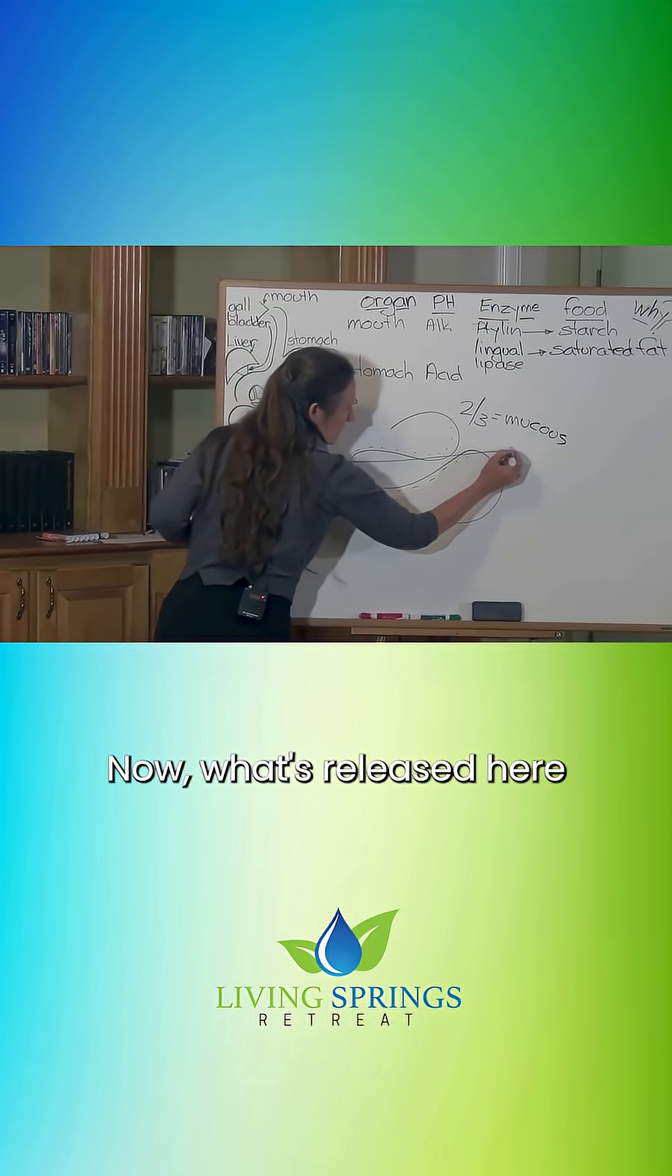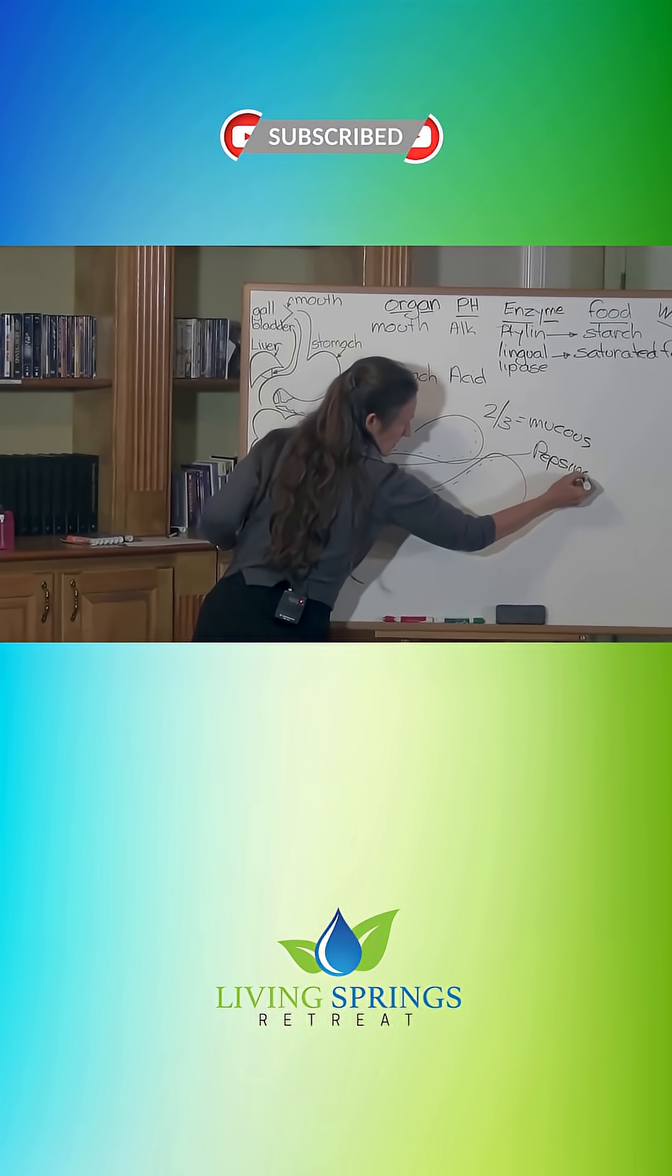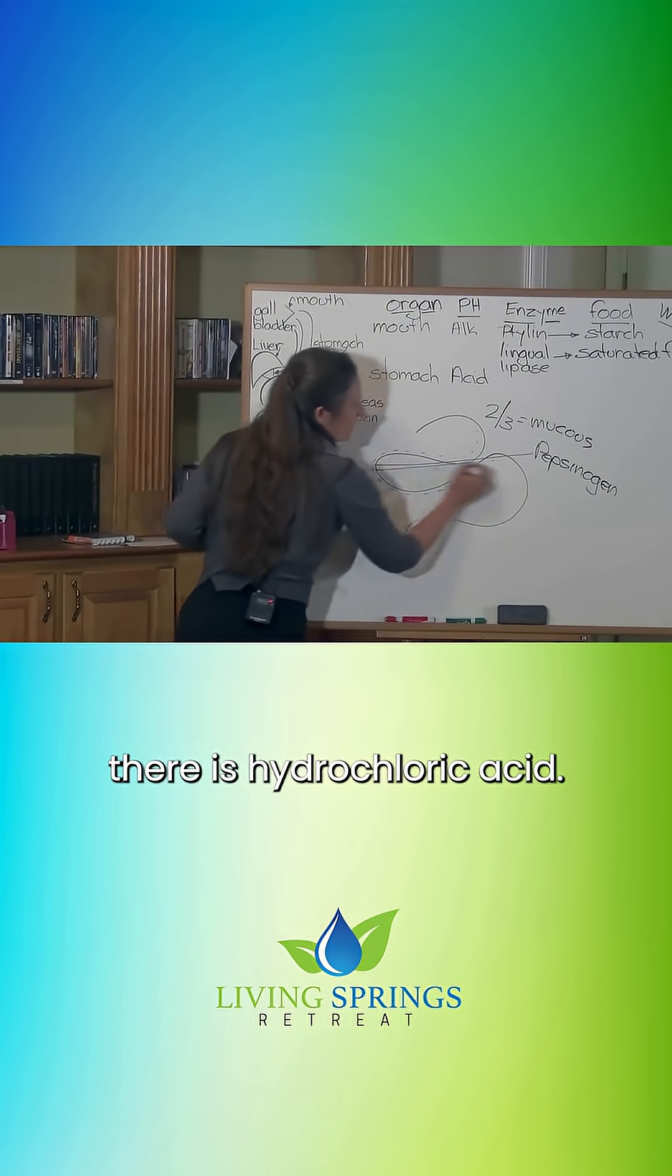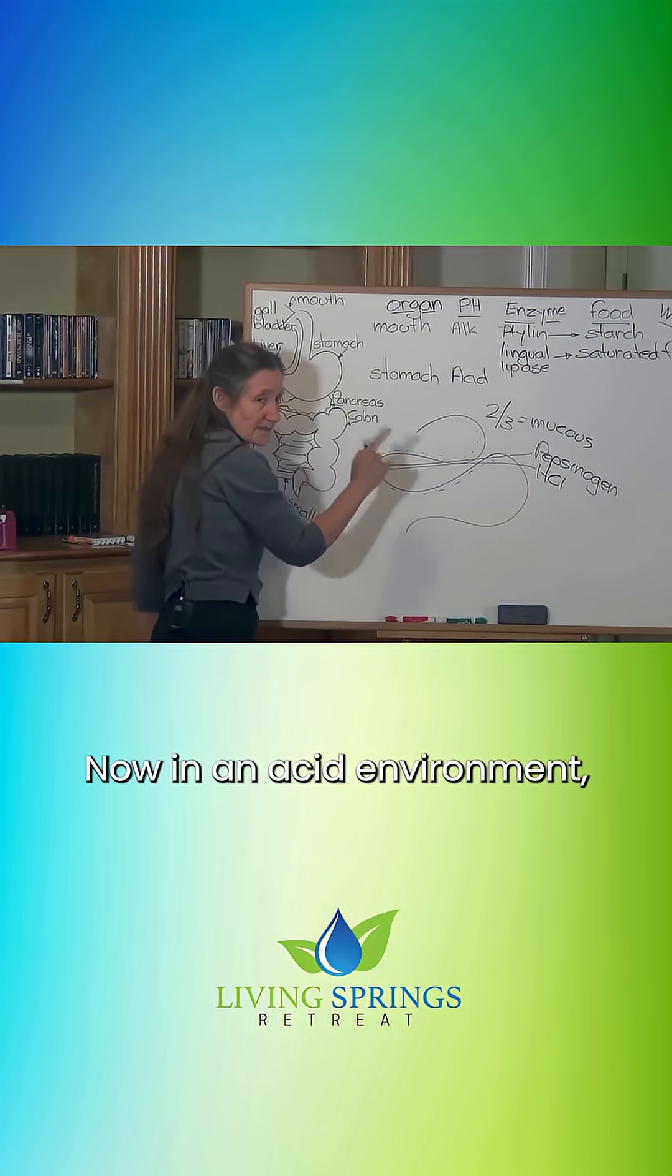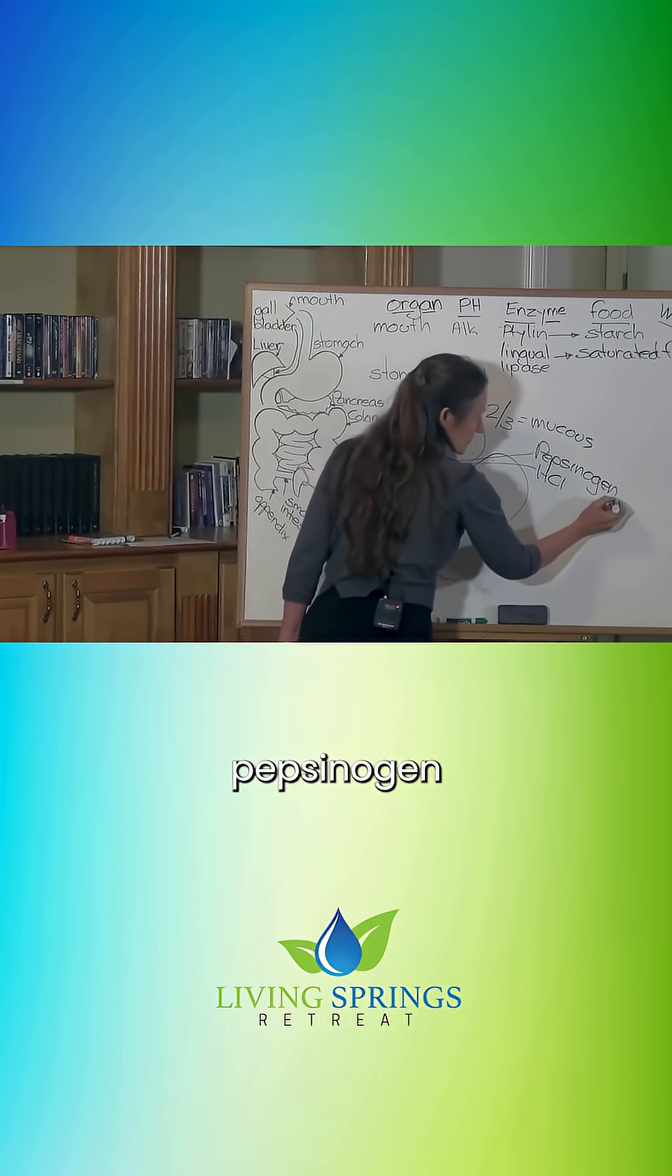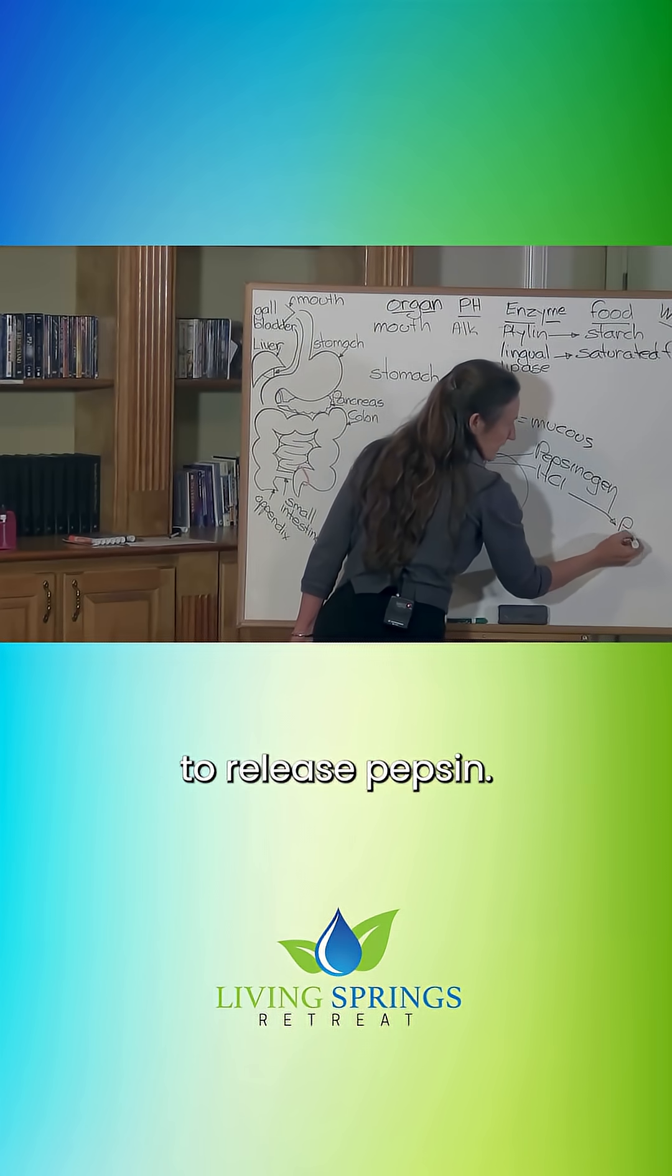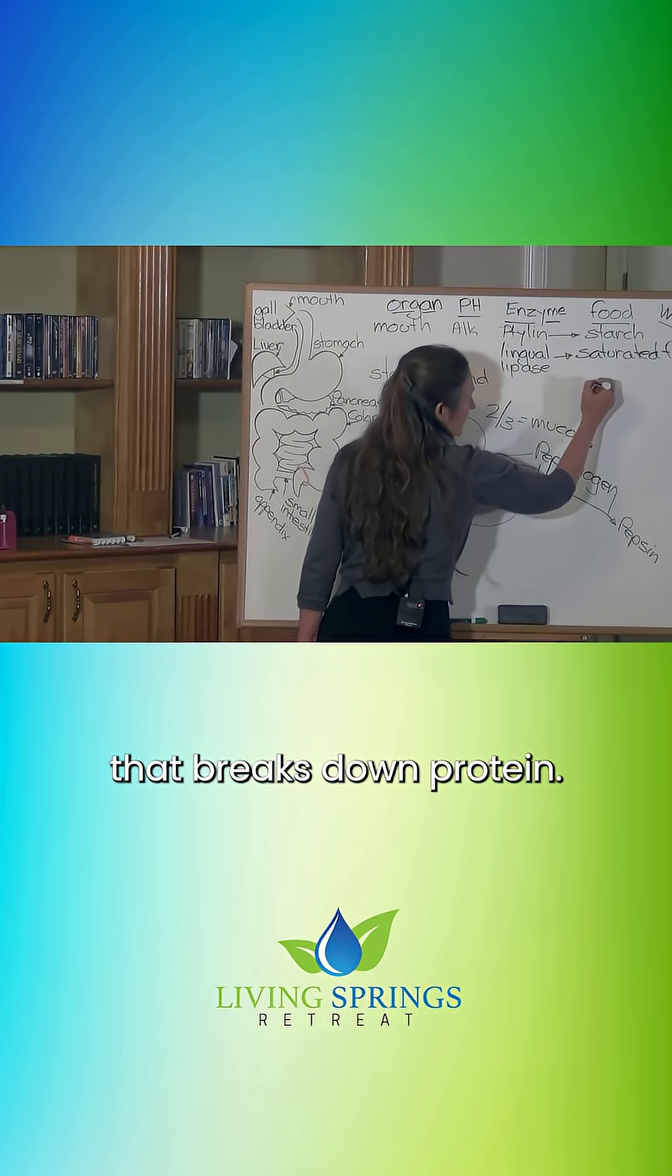What's released here is pepsinogen, and the other enzyme released is hydrochloric acid. In an acid environment, pepsinogen and hydrochloric acid unite to release pepsin, and pepsin is the enzyme that breaks down protein.